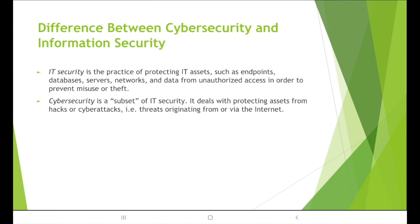Information security uses the CIA triangle — Confidentiality, Integrity, and Availability of data. You use different methods to prevent unauthorized access, modification, and manipulation of data. Cybersecurity is a subset of IT security. By using cybersecurity, you are protecting your IT network and IT infrastructure from cyber attacks — malware, ransomware, and any kind of threat from the internet. That is what cybersecurity is all about.